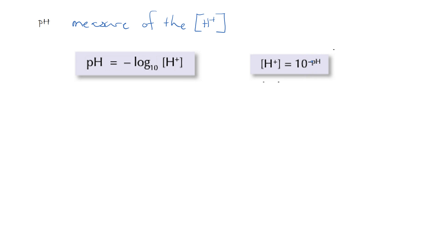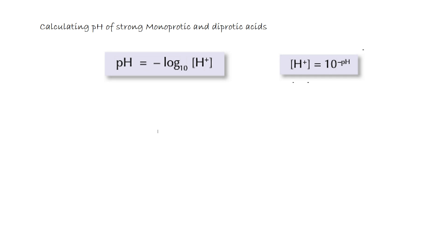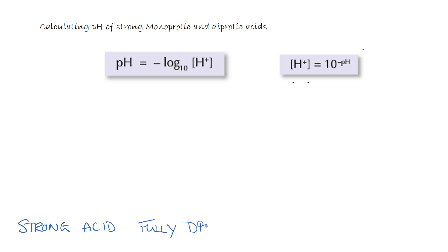Let's have a look at a couple of simple examples, calculating the pH of strong monoprotic and diprotic acids. The first thing to note is that a strong acid is one that fully dissociates in water, and this is really important when calculating the pH.